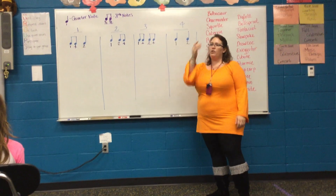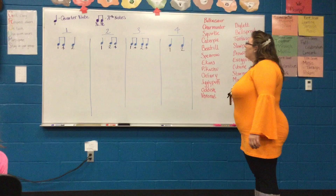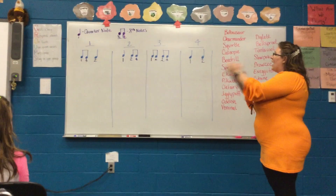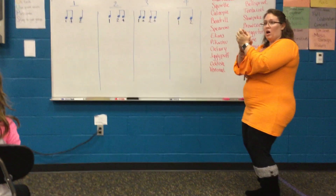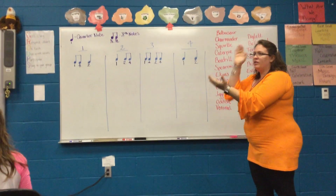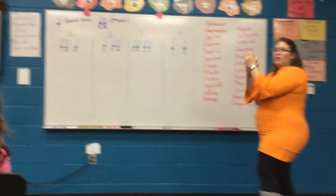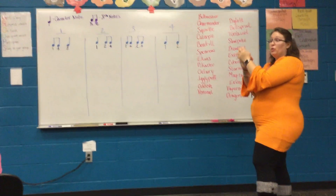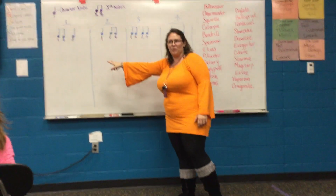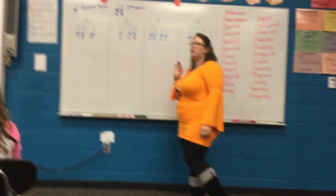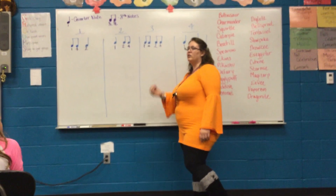Now here's your challenge. I'm going to call a number and you've got to clap that rhythm. Let's start with three: one-and, two-and. Number one: one-and, two. Number two: one, two-and. Number four: one, two. Number one again: one-and, two. Number two: one, two-and. You've got to watch out for one and two because they sound kind of similar — you're listening for where the long sounds and the short sounds are.